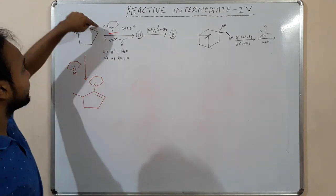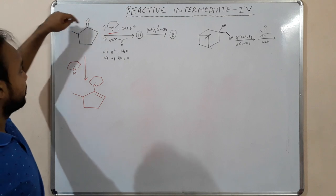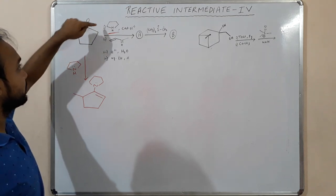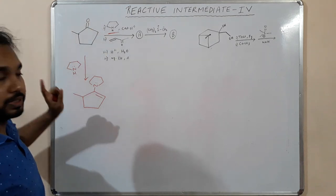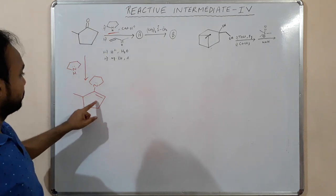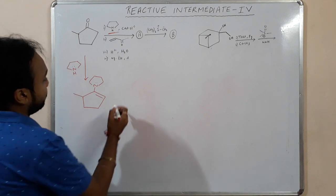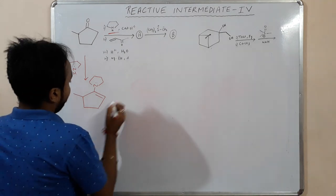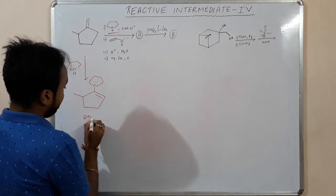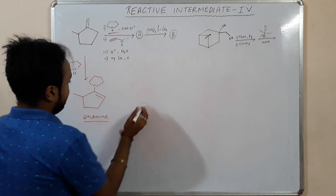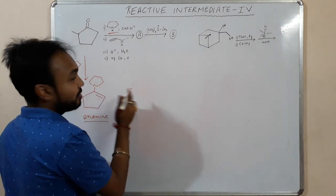This is the more hindered side, and this is the less hindered side. Here, a methyl is present; there is no methyl on the other side. So it will form the enamine over here — this is the enamine.